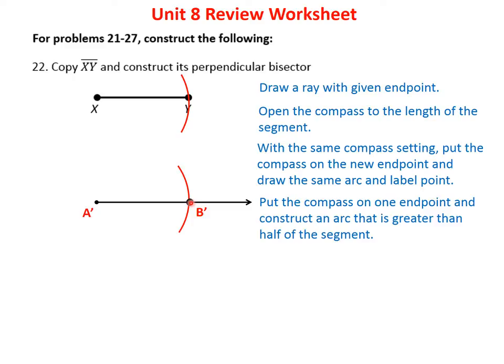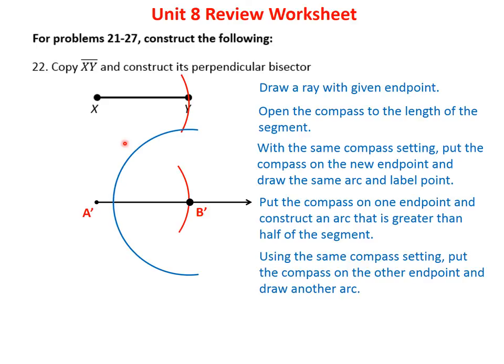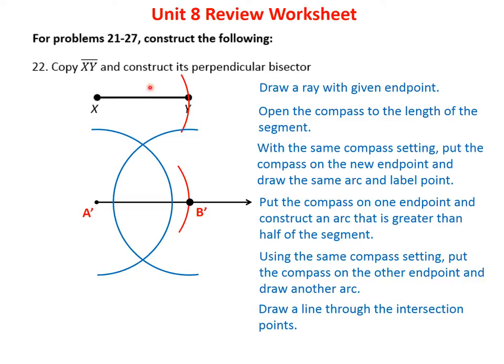Without changing the compass setting, move to point A and draw the same arc going the other way. The arcs intersect at the top and bottom. Draw a straight line from one intersection to the other — that is the perpendicular bisector of the segment.